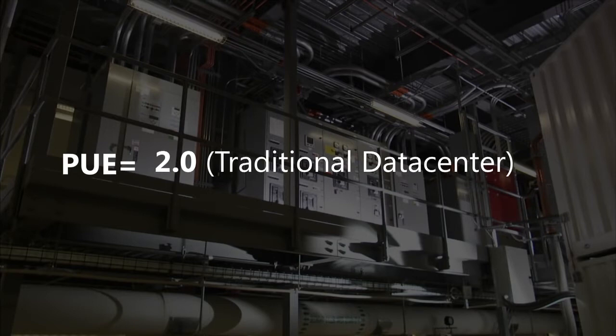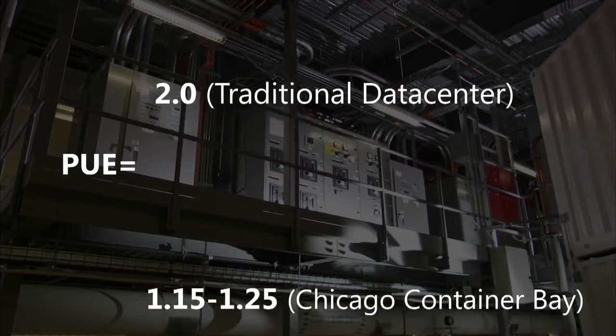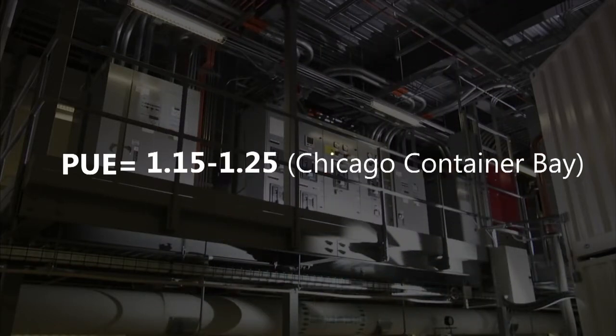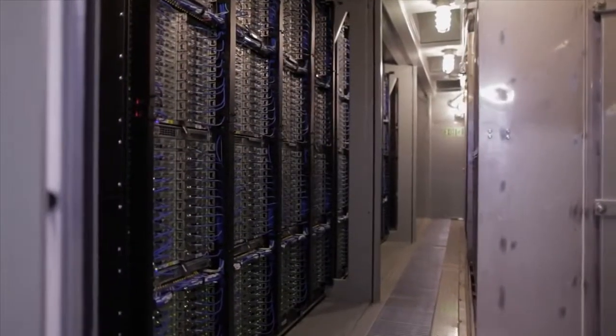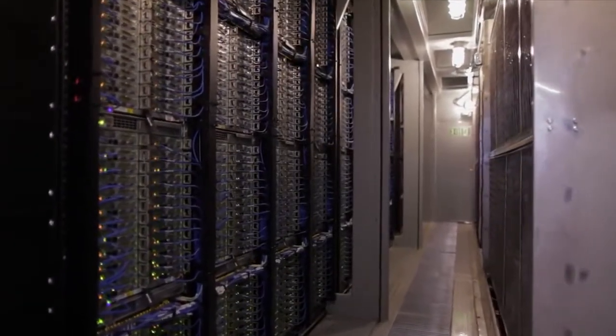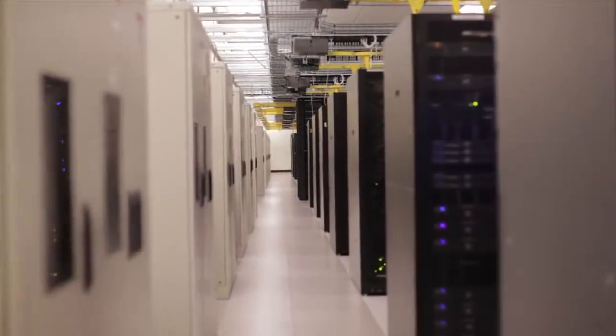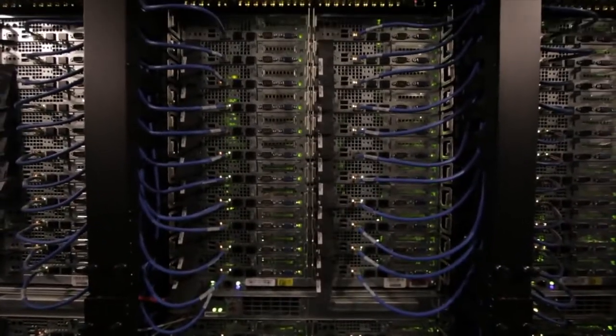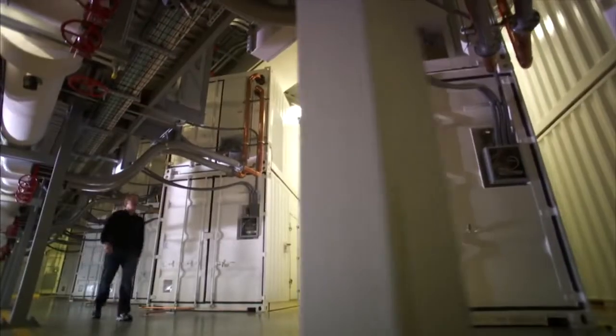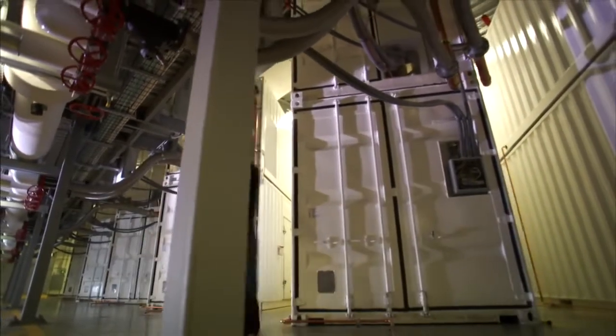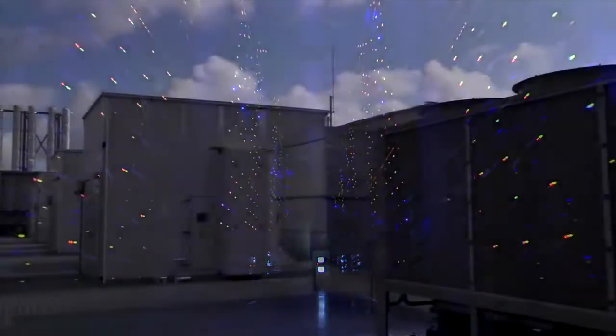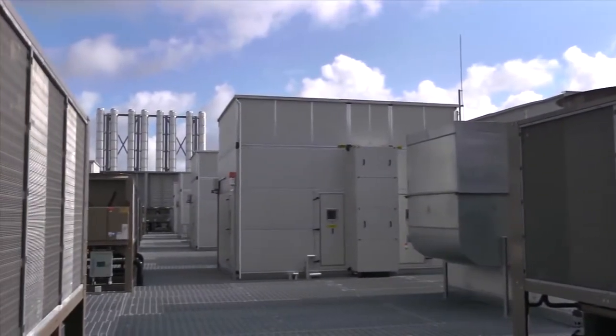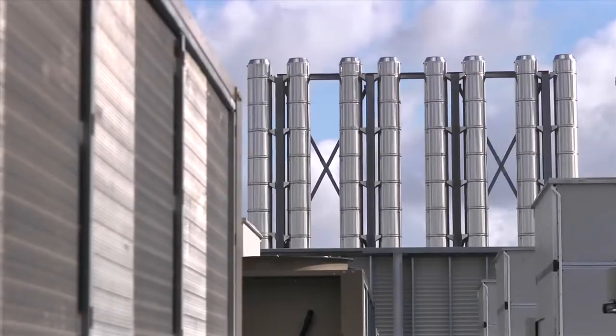Our latest modular data centers have reduced PUE significantly, typically in the range of 1.15 to 1.25. PUE is a useful metric, though we look holistically at all components of the data center and optimize for performance per watt consumed in total. Our modular approach to data center designs helps us rapidly scale to meet new customer demand, and our innovative use of free air cooling helps improve efficiency and sustainability.